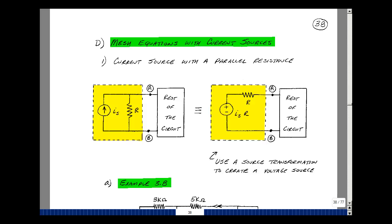There are two possibilities: one with a current source with a parallel resistance, and then a current source without a parallel resistance. If we have a parallel resistance we can do a source transformation like we did in Chapter 2, and convert this into a series voltage source and a series resistance. The value of the voltage source is just I sub s times R.